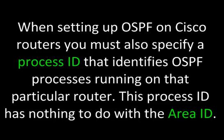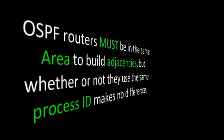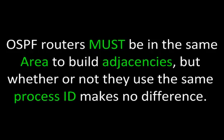When setting up OSPF on Cisco routers, you must also specify a process ID that identifies OSPF processes running on that particular router. This process ID has nothing to do with the area ID. OSPF routers must be in the same area to build adjacencies, but whether or not they use the same process ID makes no difference whatsoever.